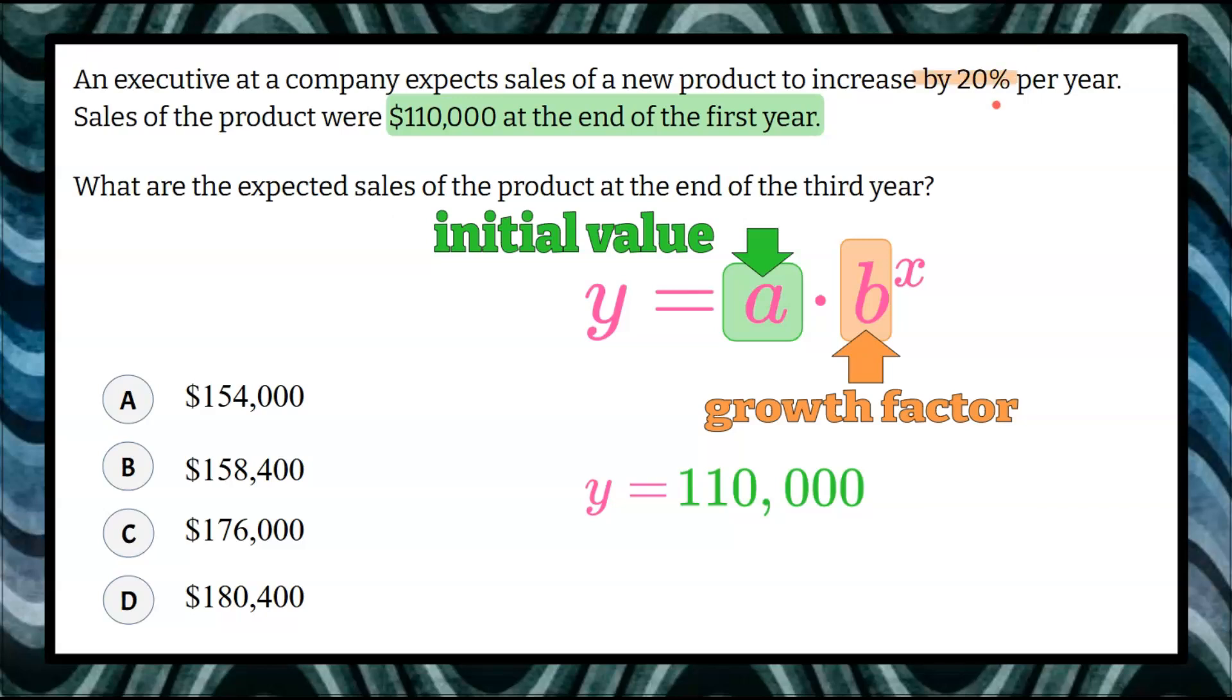We're told that sales are expected to grow by 20% per year. That means we're going to have 100% of the first year's sales plus an additional 20%. So that's 120%—it's the original amount plus 20% growth.